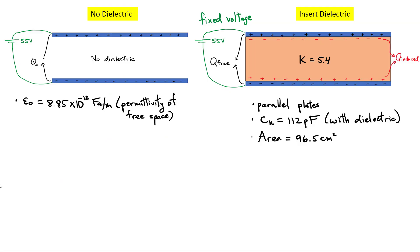So this is what we have: a parallel plate capacitor without a dielectric connected to a power supply at 55 volts. I insert a dielectric, shown here on the right-hand side, with a dielectric constant equal to 5.4. So I get some charge on the plates, I induce some charges on the surface of the dielectric, but I'm keeping the battery connected — the voltage is fixed at 55 volts. The capacitance is 112 picofarads when the dielectric is inserted.